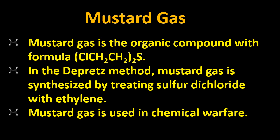It's an organic compound having formula C4H8Cl2S and its IUPAC name is bis(2-chloroethyl) sulfide. Its boiling point is 270°C and its molar mass is 159.08 g/mol. Impure forms of the gas have an odor that resembles mustard. It is prepared by Despretz's method. Mustard gas is synthesized by treating sulfur dichloride with ethylene and is used in chemical warfare.